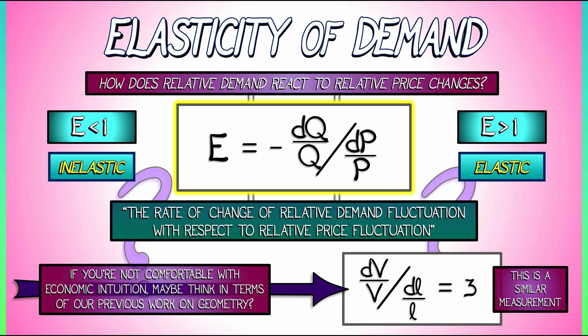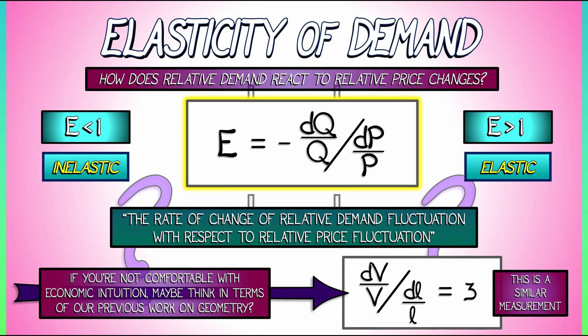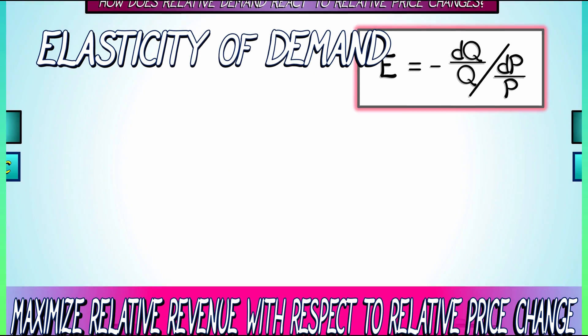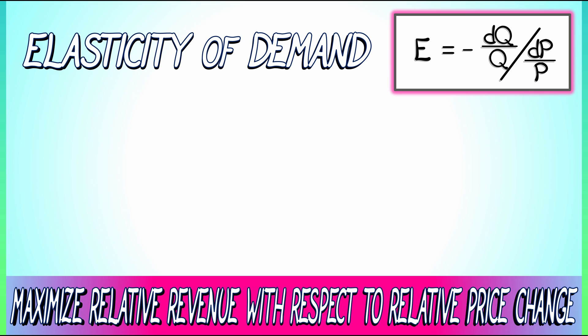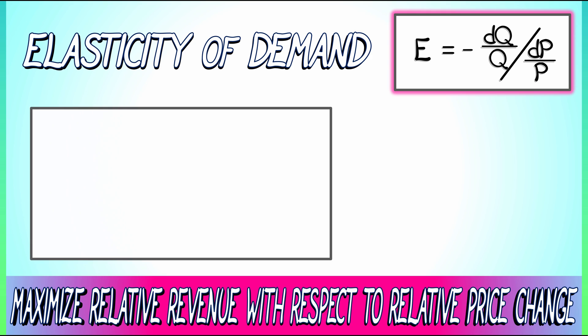Let's see what else we can do with this elasticity. Here's a problem: let's say you want to maximize relative revenue with respect to relative price change. We're going to be working with relative rates of change. Revenue, denoted R, is by definition price times quantity — it's how much money we're making when we sell this many at this price.